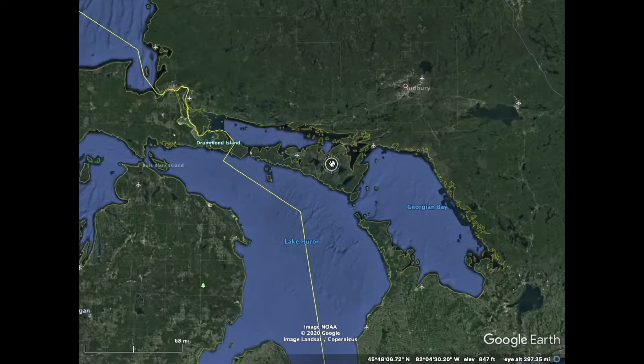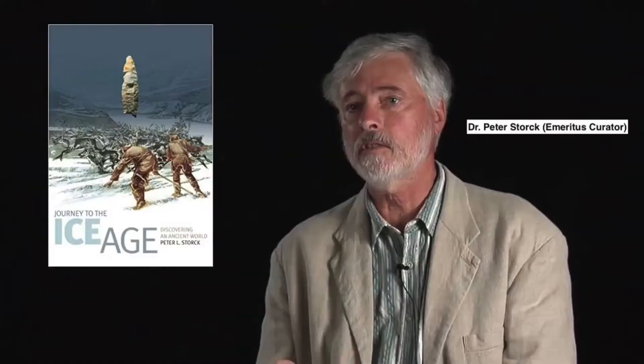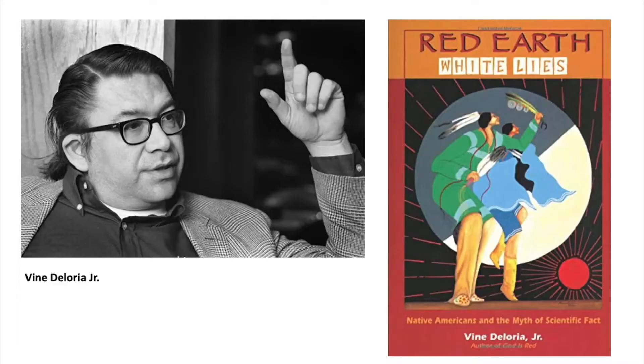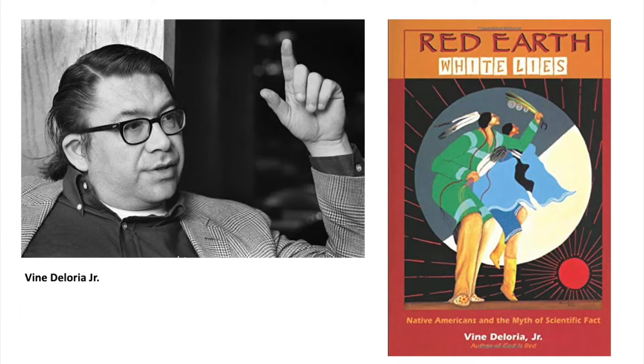An important part of a collection at the ROM comes from a site called Cheguinda on Manitoulin Island, Ontario — one of the older sites in Ontario where we can study really early human history. This was excavated by an emeritus ROM curator called Peter Stork; I recommend looking at his work. Also of note, you can look at what Vine Deloria says about this site in the book I mentioned earlier — he argues the site is much older than archaeologists think.